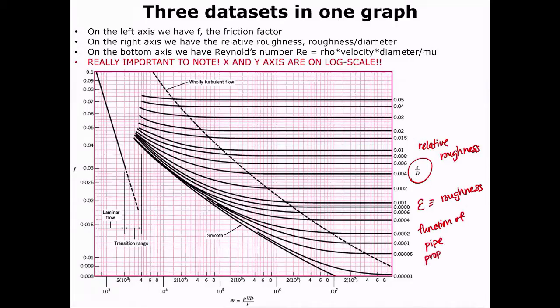So if your pipe is very, very smooth, you see this beautiful line right here, then you can assume your epsilon is approximately zero.